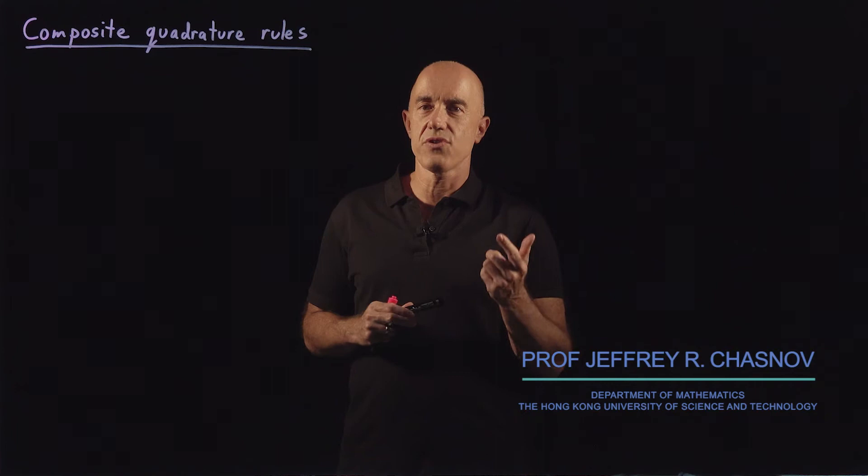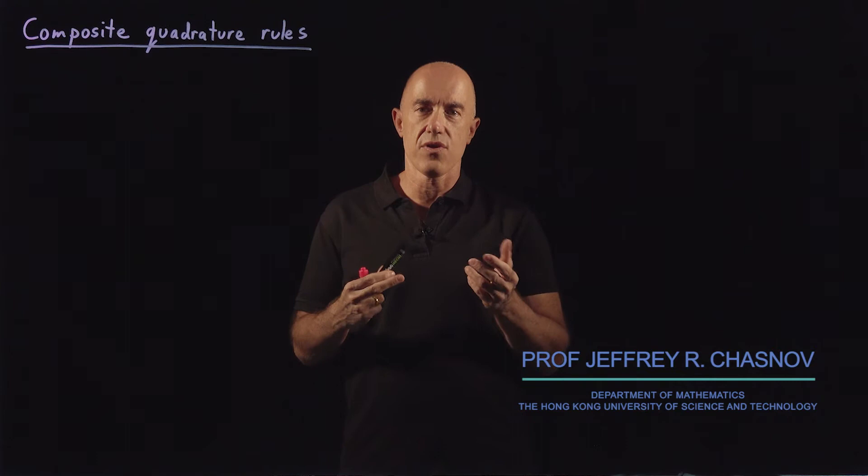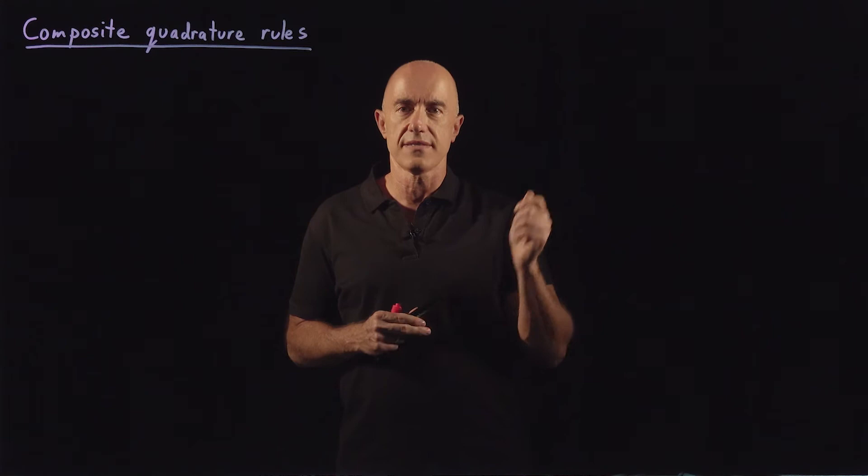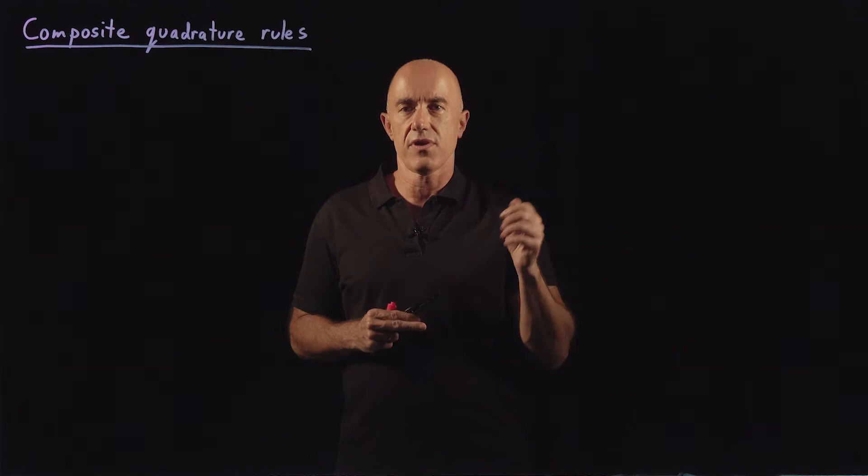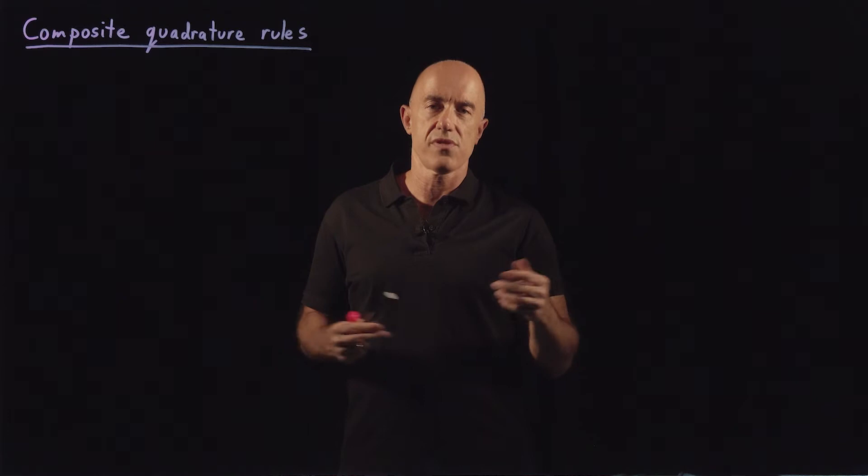In this video, I want to show you what the composite quadrature rules look like. We're going to take our elementary integration formulas, particularly the trapezoidal rule and Simpson's rule, and use them to construct general formulas for integrating a function from a to b. The elementary formulas were just from integrals from 0 to h.